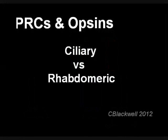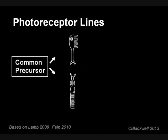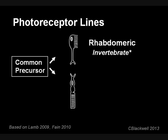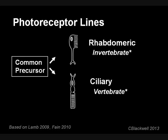First, we are going to talk about different families of photoreceptors: ciliary versus rhabdomeric. If rods and cones are brother and sister, it turns out they have cousins. In the animal kingdom, there are two lines of photoreceptor cells that probably came from an ancient precursor cell. One line is called rhabdomeric and is found mostly in invertebrates, like squid and the compound eyes of insects. The other photoreceptor line is called ciliary, and this type is generally associated with vertebrate eyes.